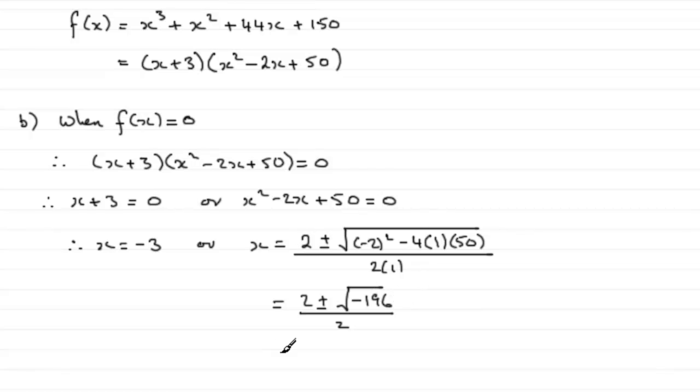So we've got 2 plus or minus 14i divided by 2, and we can simplify this because we can divide 2 into each of those two terms. So we've got 1 plus or minus 7i.